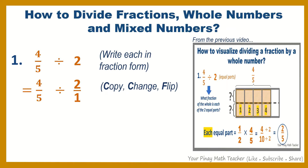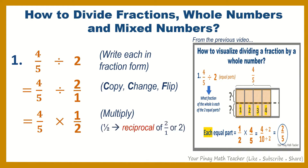Copy, change, flip. So copy the dividend 4 fifths, change the division sign to a multiplication sign, and flip 2 over 1 — it becomes 1 half. After that, you multiply. By the way, 1 half is called the reciprocal of 2 over 1, or 2.